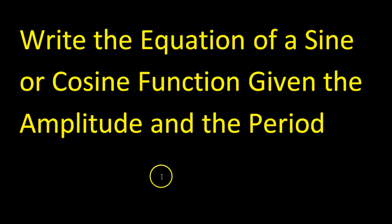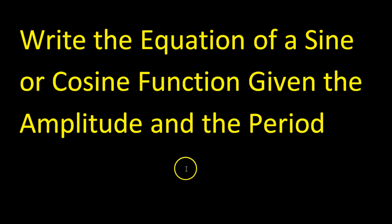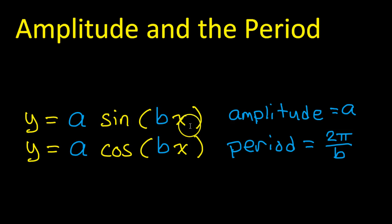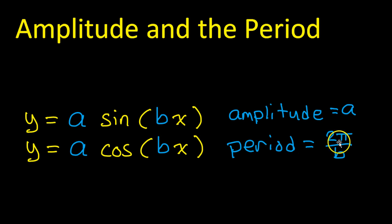In this video we will learn to write the equation of a sine or cosine function given the amplitude and the period. Remember that if you have an equation in the form y equals a sine bx, a is the amplitude and the period is 2 pi over b.